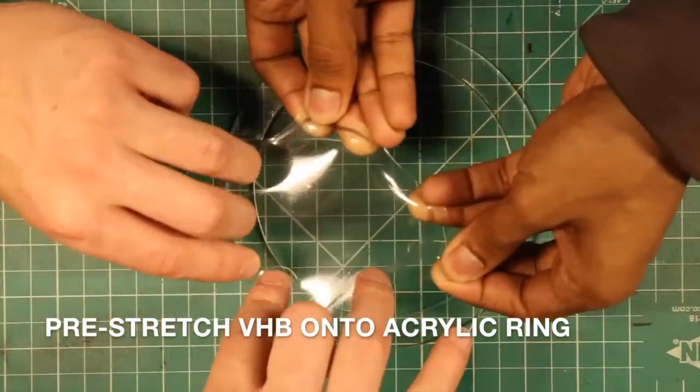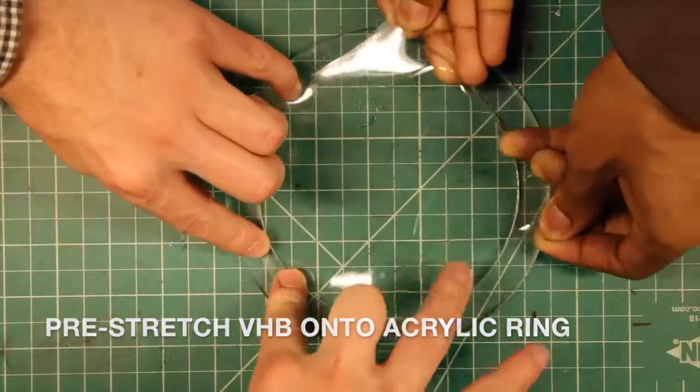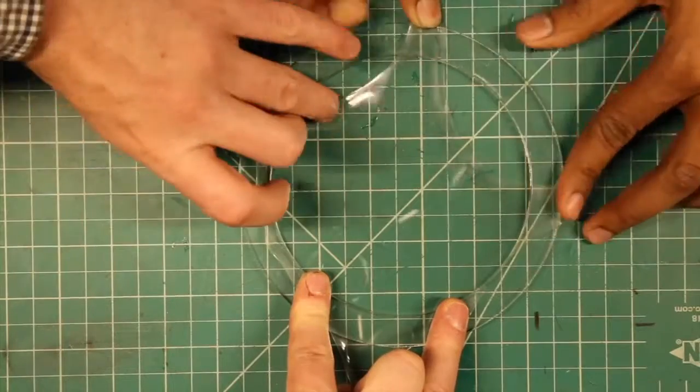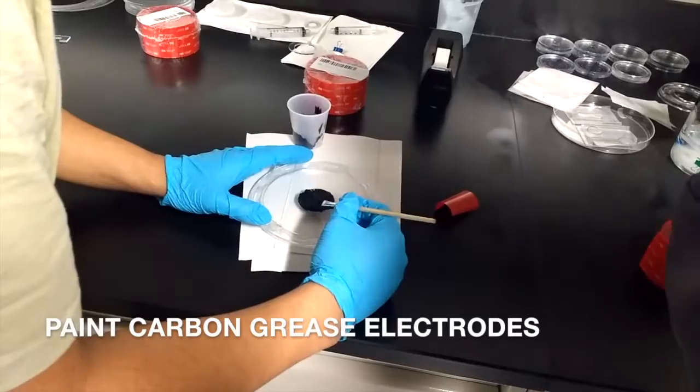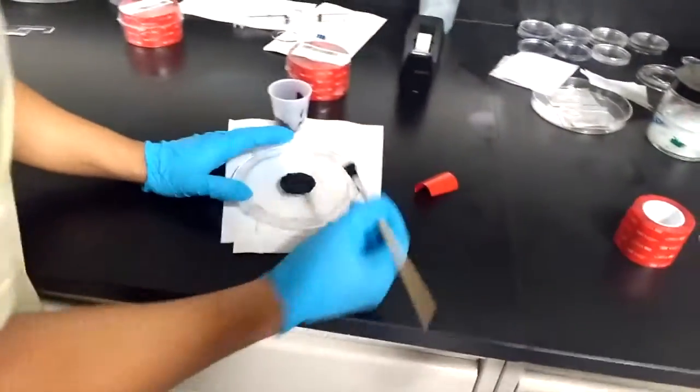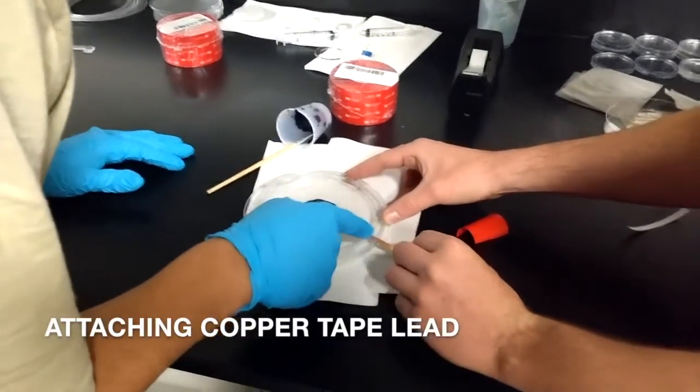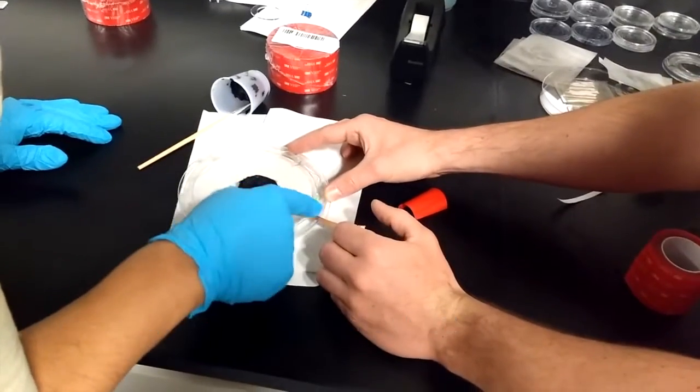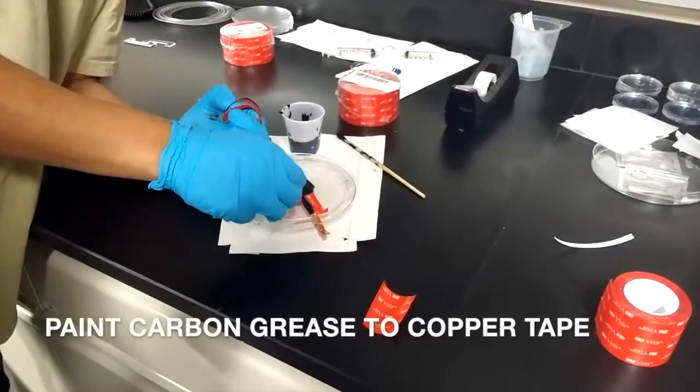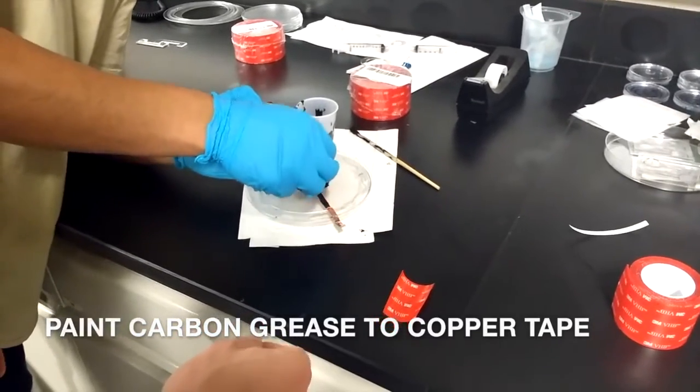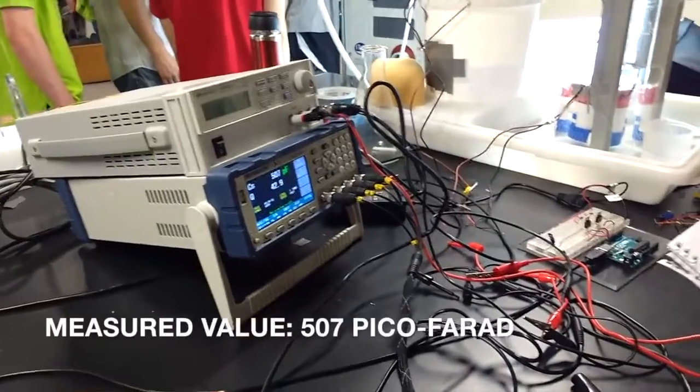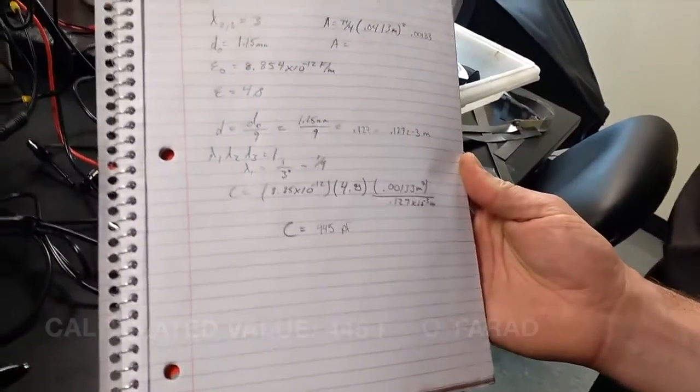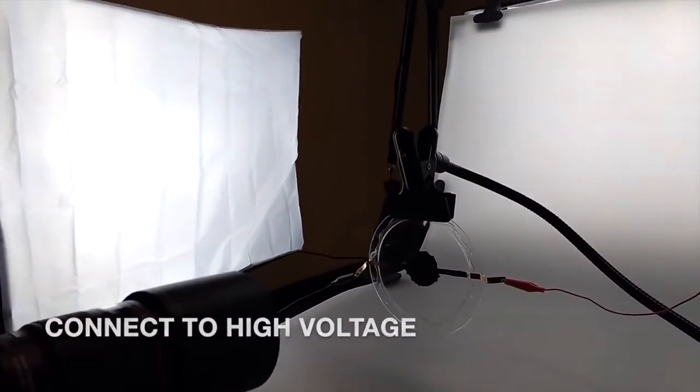Pre-stretch your VHB onto your acrylic ring by a pre-set amount. In this case, we're stretching by three times. Paint carbon grease on both sides, making sure to cover the entire electric area. Attach copper tape to both sides to create a link between your voltage source and your actuator. Paint a line of carbon grease from your electrode to the copper tape. Measure your capacitance with an LCR meter and compare it with your calculated value.